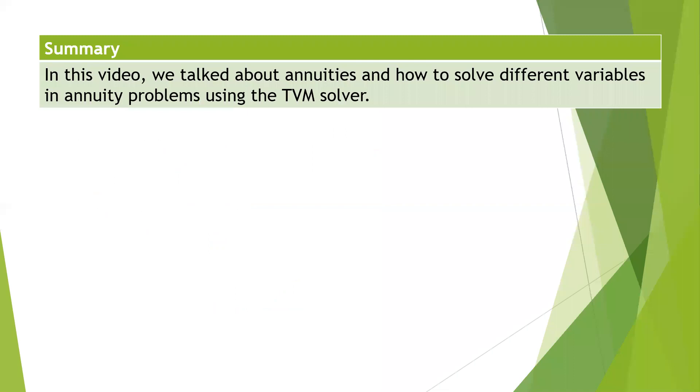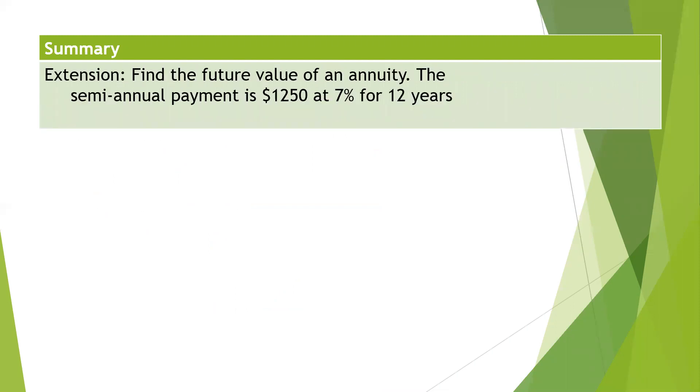So we talked about annuities. How do we solve for the different variables using the solver? The solver is key. I want you to read this question, pause the video, and try it on your own. We have a semi-annual payment of $1,250 at 7% for 12 years. What's the future value? Pause your video, try it on your own. If you need the link to the solver, it's in the comments and then come back.